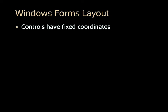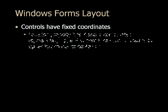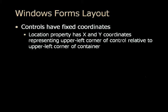In Windows Forms, controls have fixed coordinates. Every control has a location property that has X and Y coordinates, and those represent the upper left corner of the control relative to the upper left corner of the container. When you put a control in a form, it stays in the position you put it in.